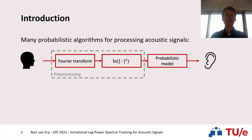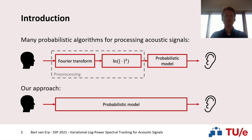If we have a look at the literature, we can see that many probabilistic algorithms for processing acoustic signals look as follows. First, you have an acoustic signal which we pre-process by applying some kind of Fourier transform and then converting it to a log power spectrum. This spectrogram is next modeled using a probabilistic model for algorithms such as noise reduction or speech enhancement. I'll show you an alternative way to model our acoustic signal by including these pre-processing steps in our probabilistic model.